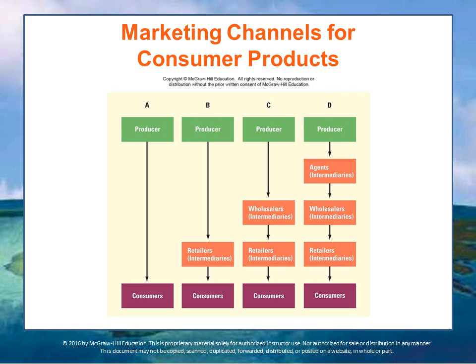Channel D is a product that first goes through an agent, then a wholesaler, then a retailer before reaching the consumer. This long channel of distribution is especially useful for convenience products. Candy and some produce are often sold by agents who bring buyers and sellers together — agents introduce specialty producers into the wholesaler channel, which then sells into the retailer channel, adding yet another layer of middlemen to facilitate distribution.